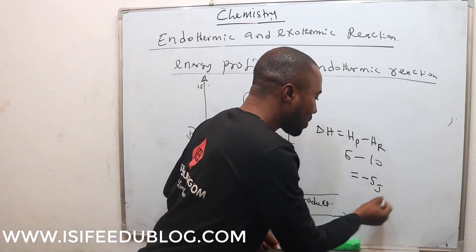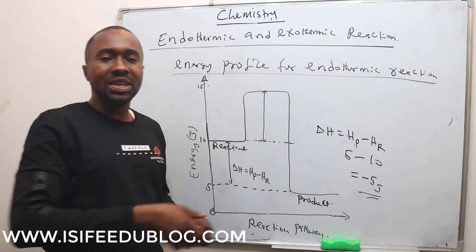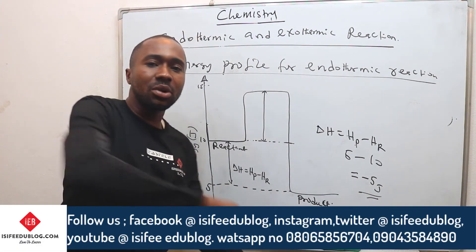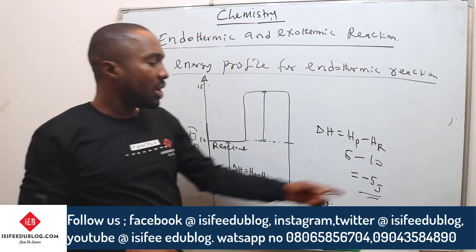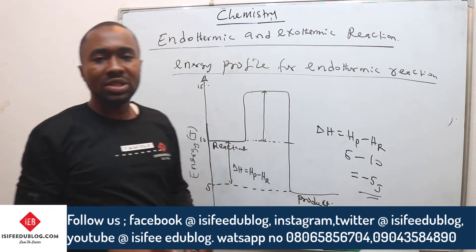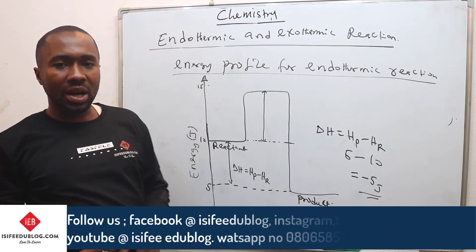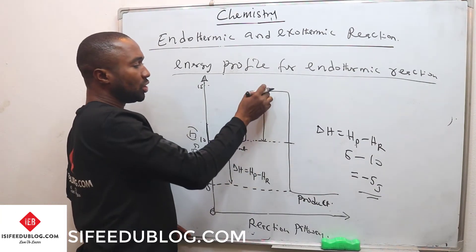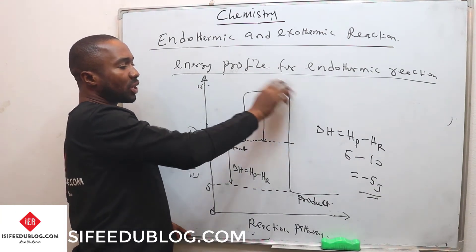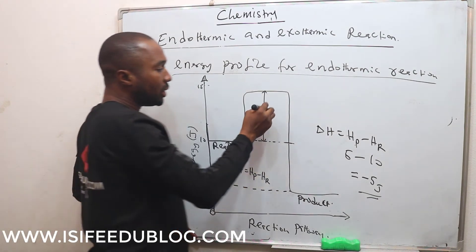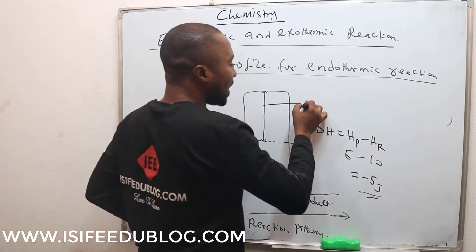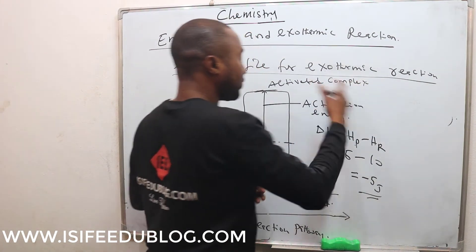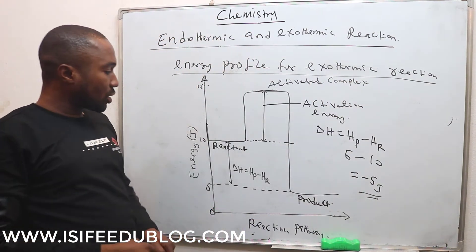Because of the negative sign, it means that heat is evolved — heat is taken away from the system. This confirms the reaction is an exothermic reaction. The distance from the reactant to the height of the energy profile is called the activation energy. This is the energy profile for the exothermic reaction.